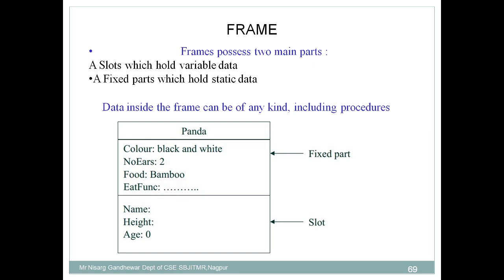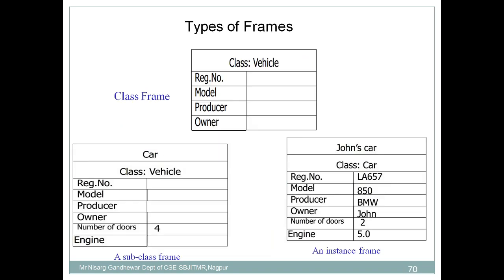This is one representation of a frame. Now we discuss what are the different types of frame. There are three types: one is a class frame, second is a subclass frame, and third is an instance frame. In case of a class frame, here you can see the class is a vehicle, and it possesses attributes: registered number, model, producer, and owner. This is a class frame.